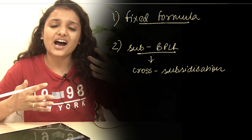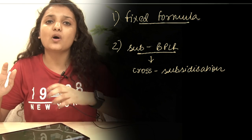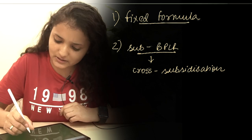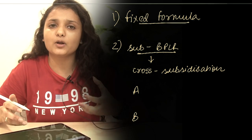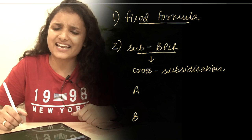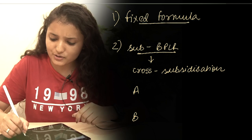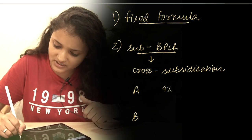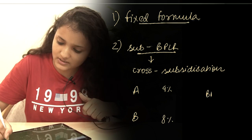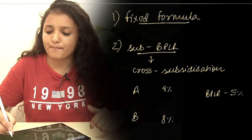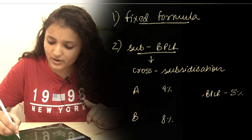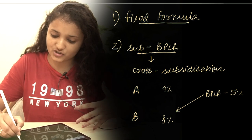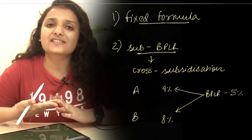Cross-subsidization means charging higher prices to one type of customer so as to artificially lower the rates for a different type of customer. For example, suppose there are two customers. Customer A belongs to the most credit-worthy group and Customer B does not. The bank charged say 4% to Customer A and 8% to Customer B, when its BPLR was say 5%. So the bank is charging higher interest rates to Customer B to artificially lower the rate for Customer A — this is cross-subsidization.